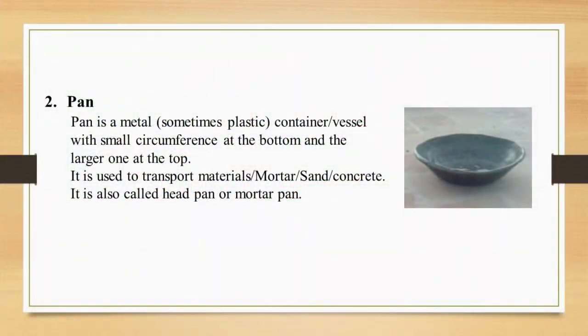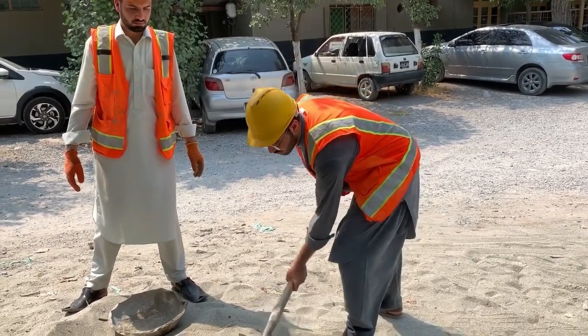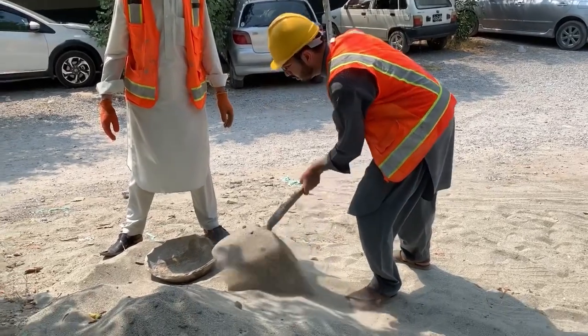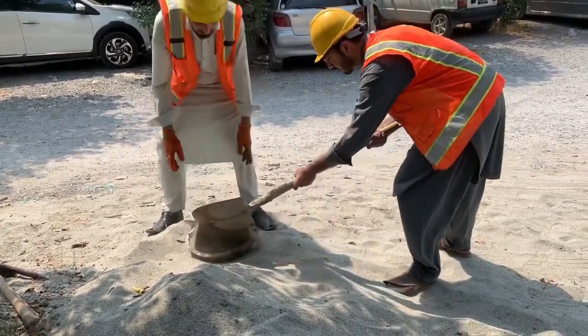The second tool is the pan. A pan is a metal, or sometimes plastic, container vessel with a small circumference at the bottom and a larger one at the top. It is used to transport materials like mortar, sand, and concrete. It is also called a head pan or mortar pan. In this video, we are filling the pan with sand in order to carry it for other construction purposes.